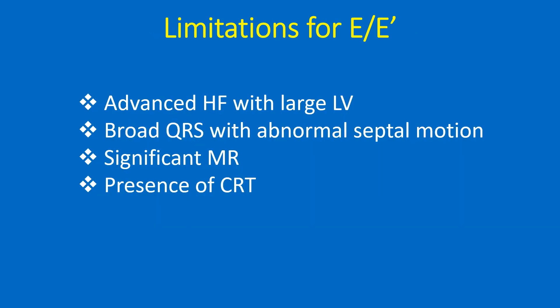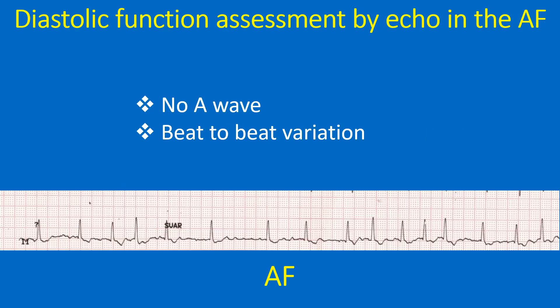There are also limitations for E by E prime in the assessment of LV diastolic dysfunction. One situation is decompensated advanced systolic heart failure with a large left ventricle. Broad QRS with abnormal septal motion, significant mitral regurgitation, and presence of cardiac resynchronization therapy are all confounding factors. LV diastolic dysfunction assessment by echo usually relies on mitral inflow velocity measurement with E by A reversal as evidence of diastolic dysfunction. In atrial fibrillation, the absence of atrial contraction and the AA wave makes this assessment impossible.